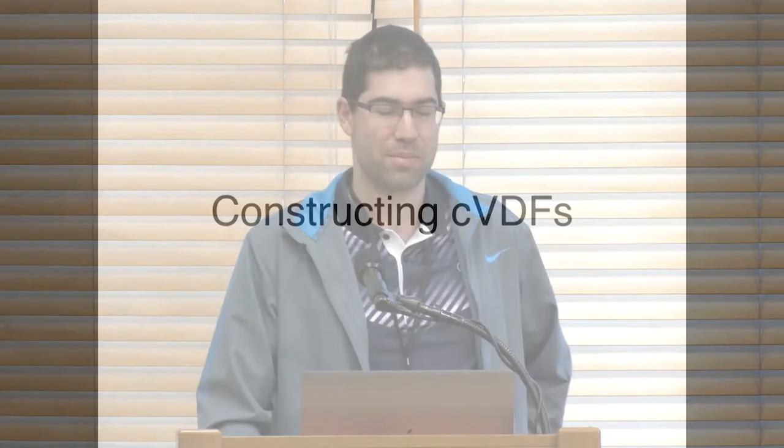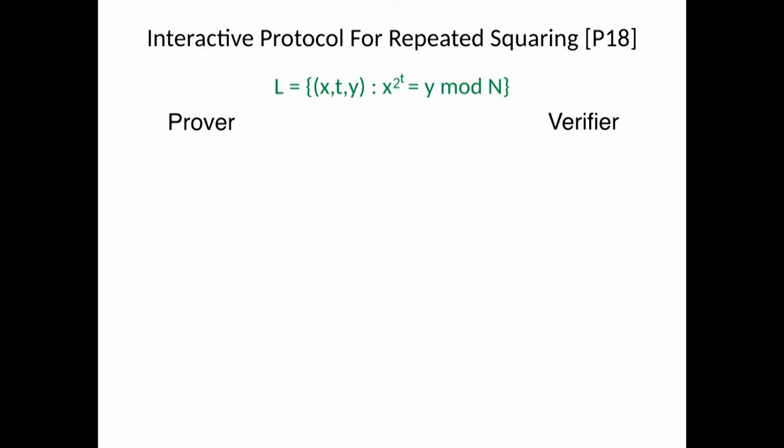So I'll briefly say how we construct this primitive. We start with Pietrzak's protocol for VDFs. We start with the interactive protocol. It will be easy for me to explain how the construction works. We want to prove that x to the 2 to the t is equal to some y. So the prover wants to compute that from x after doing t exponentiations, you will get the value y. The prover splits the computation into two parts and sends the midpoint to the other side.